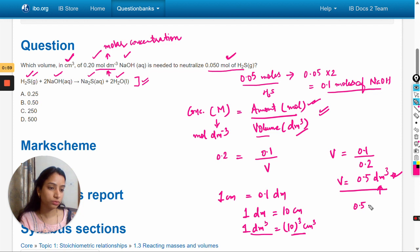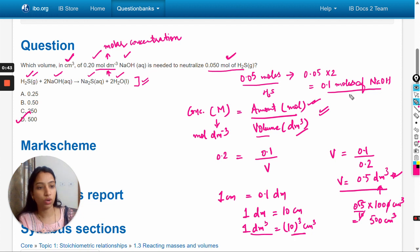So 0.5 decimeter cube equals 0.5 into 1000 centimeter cube, which will be 500 centimeter cube. So the answer should be option D.